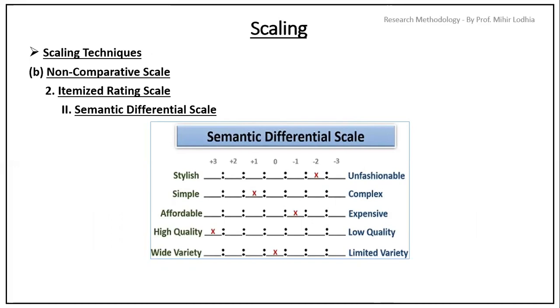So, from left hand side, style is simple, affordable, high quality and wide variety. To the extreme right hand side, unfashionable, complex, expensive, low quality and limited variety.